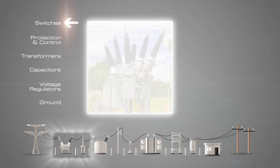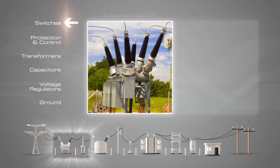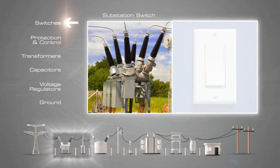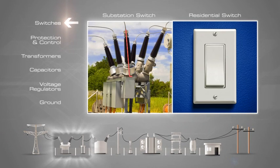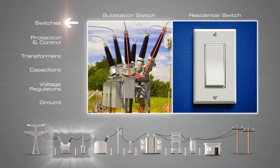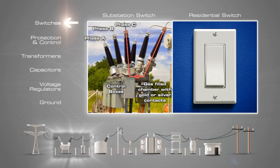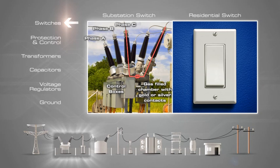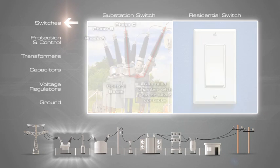A switch is an electrical component that can break an electrical circuit, interrupting the current or diverting it from one conductor to another. Switches may be operated by process variables such as pressure, temperature, flow, current, voltage, and force. These variables can act as sensors in a process and be used to automatically control a system.